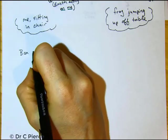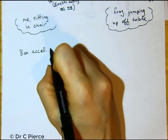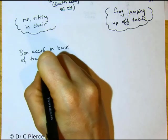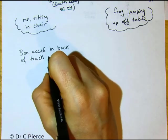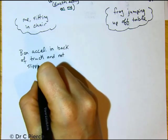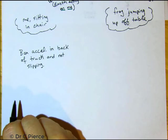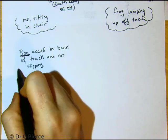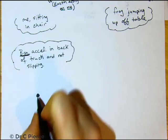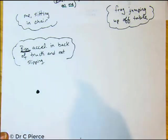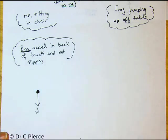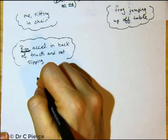The box accelerating in the back of the truck. Let's draw the free body diagram of the box. And I'm going to imagine the truck is accelerating to the right. The box is accelerating to the right. Earth is pulling down on the box.